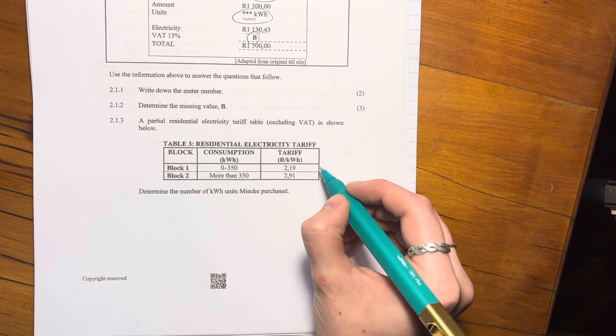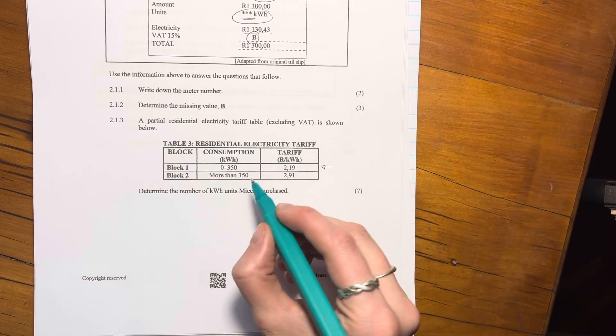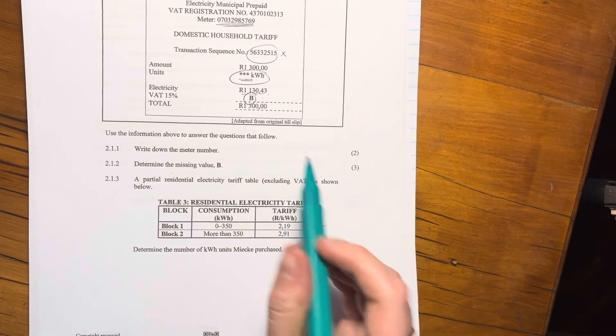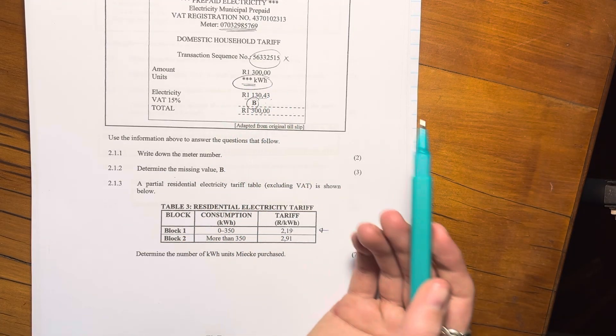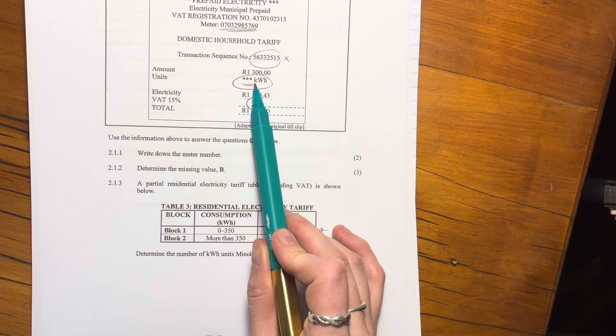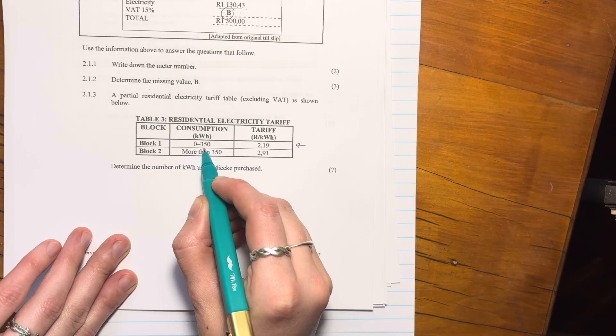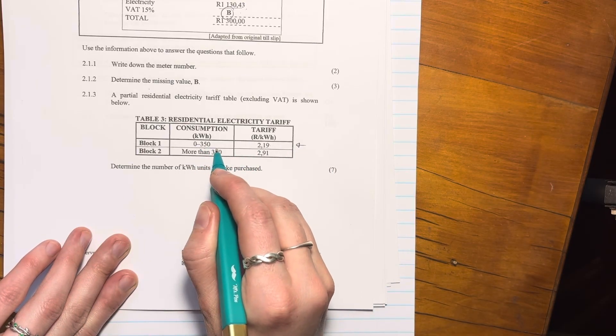If she was sitting in this bracket, which we don't think is the case, because 350 times this is unlikely to be getting me to 1,300, because we know that that's what needs to be paid. Okay. We need to figure out how much she would pay if she just used 350. Okay. Because that tells us kind of like how far she got out of block one into block two.